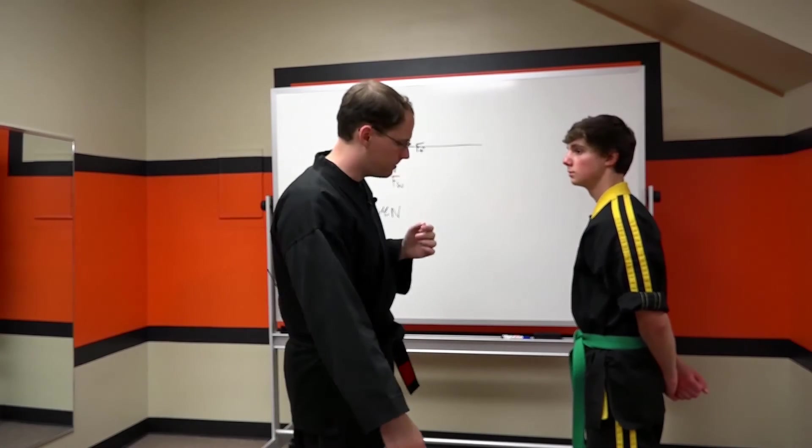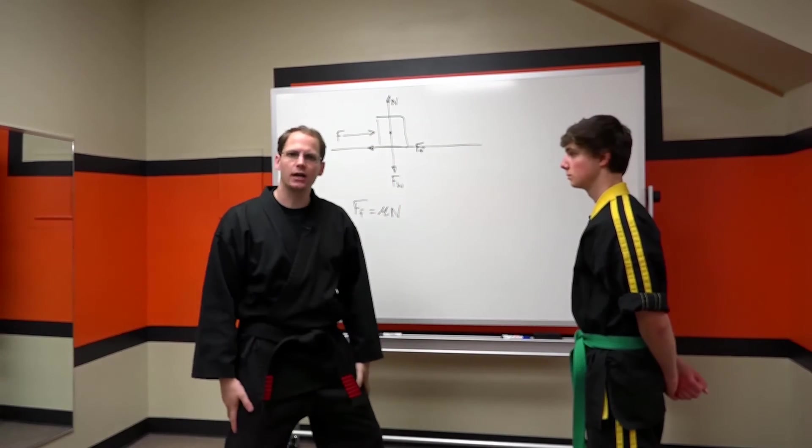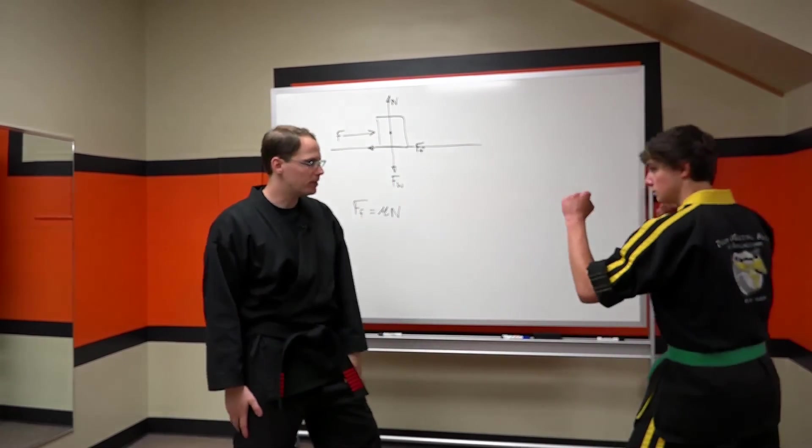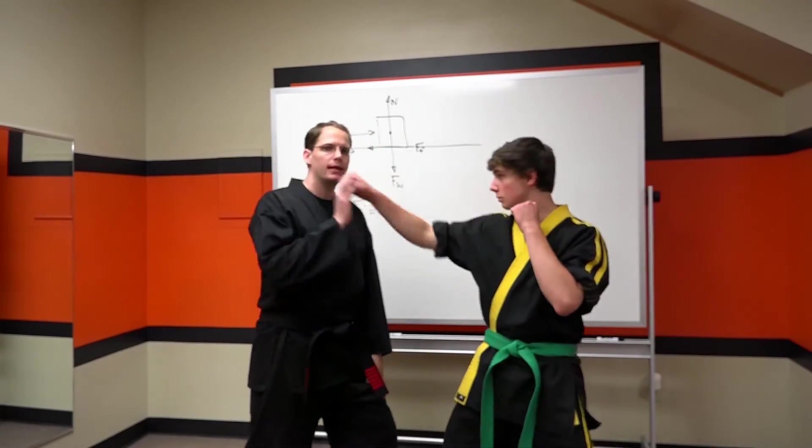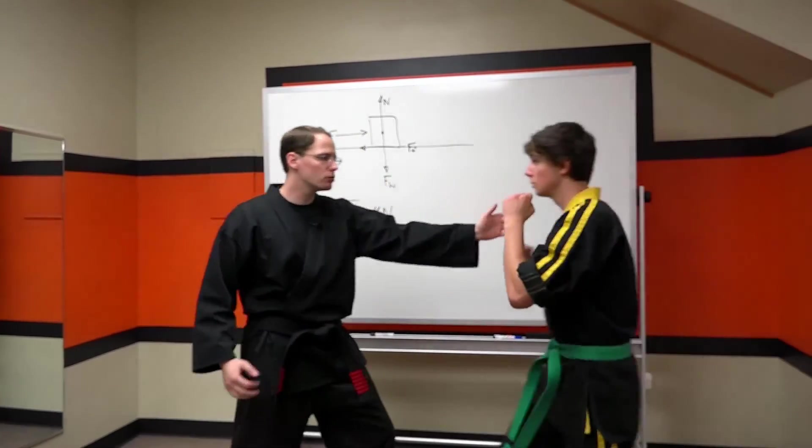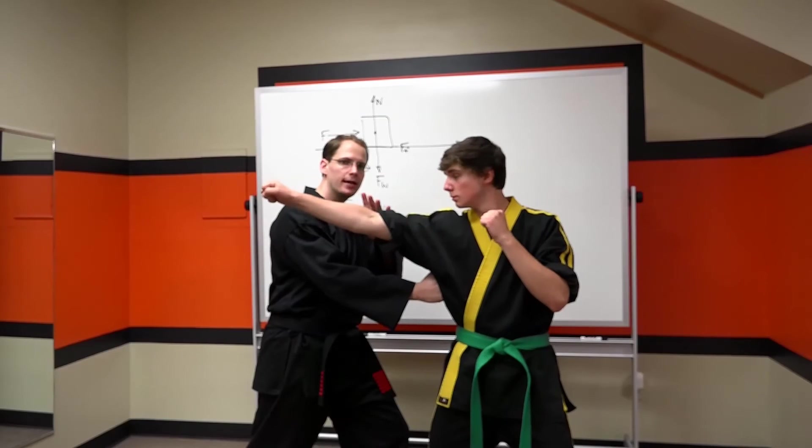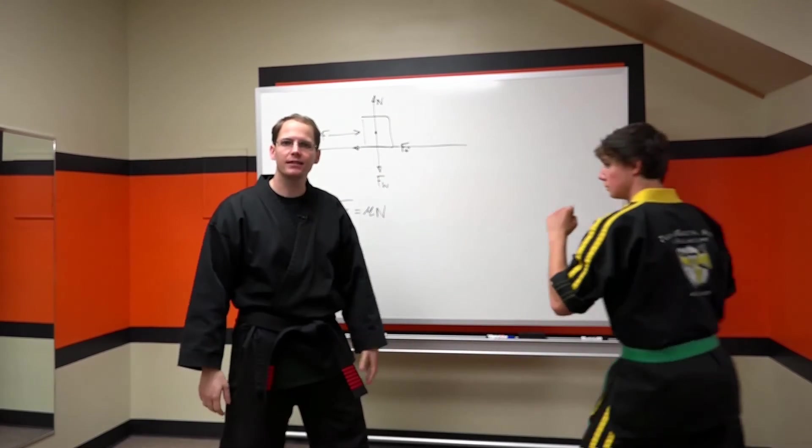Now one last example. This time I'm going to be on guard and Justin throws a punch and I'm going to slip the punch. Now I could slip the punch, move from a neutral position to a forward position and punch him and I get borrowed momentum, and that can be incredibly effective.